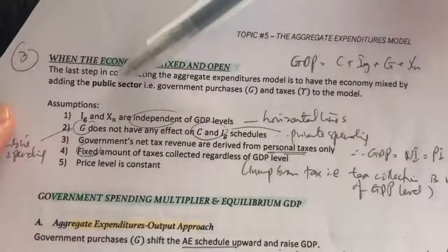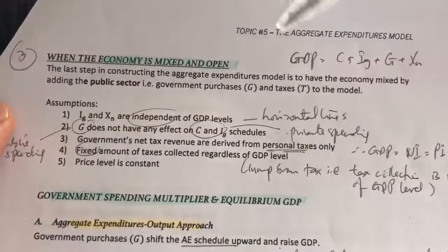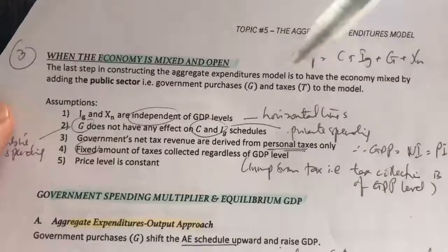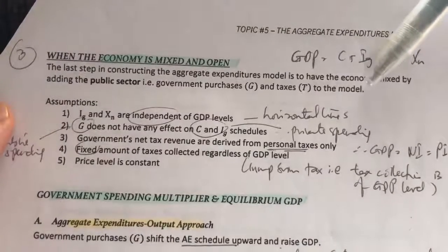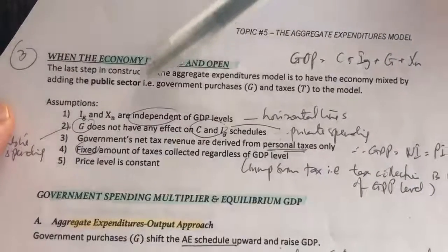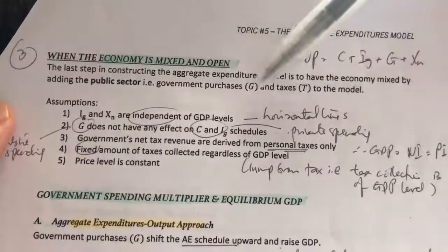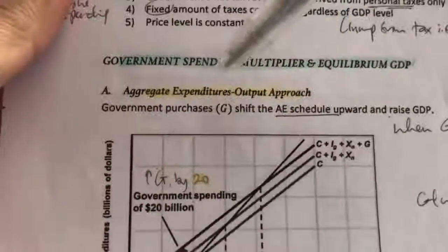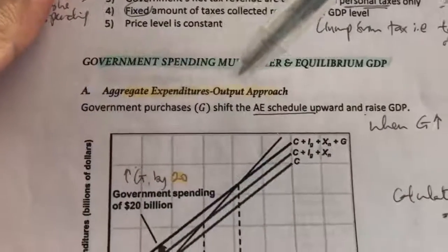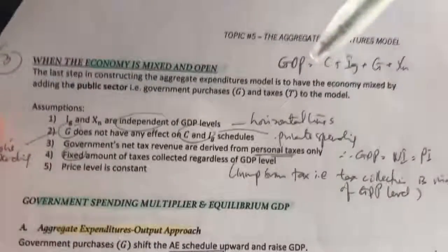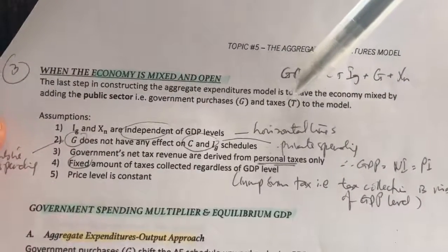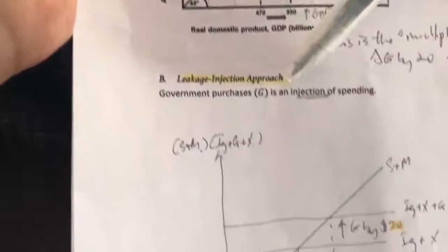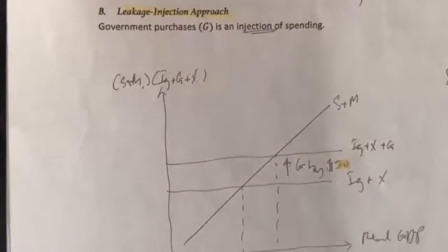When the economy is mixed and open, we add the public sector into the equation. What that means is we're including not only G but taxes in the model as well. We will see how G is reflected in the Keynesian model or the aggregate expenditures and output approach, whereas taxes are included using the leakage and injection approach.